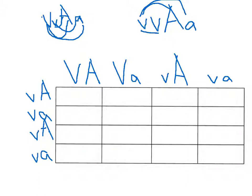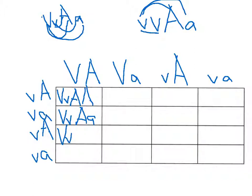Now solving the cross: across the top we have big V little v and two big A's. Setting up the Punnett square, we combine the father's gametes — big V big A, big V little a, little v big A, little v little a — with the mother's gametes — little v big A, little v little a. Some combinations come up the same twice.